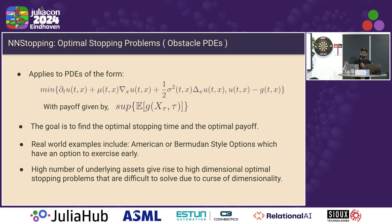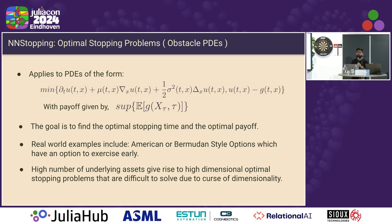NN-stopping is for optimal stopping problems. It applies to PDEs of this form, usually called obstacle PDEs. You typically find these problems when you try to exercise American or Bermudan style options, where you have an option to exercise early. High numbers of underlying assets give rise to high-dimensional optimal stopping problems, which are difficult to solve due to the curse of dimensionality. The goal is to find the optimal stopping time and the optimal payoff.